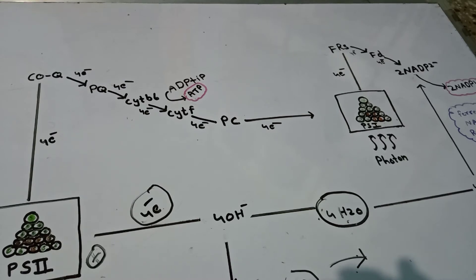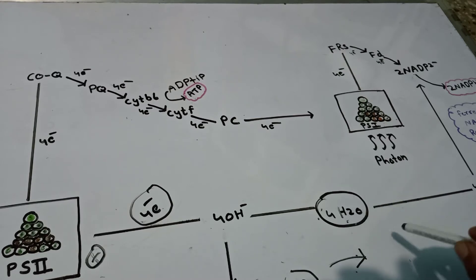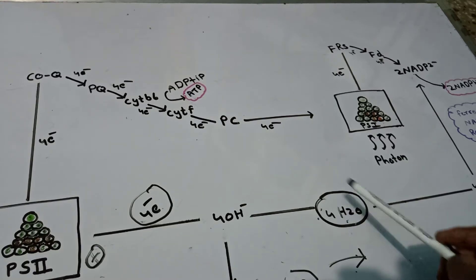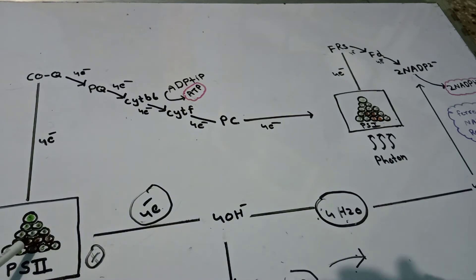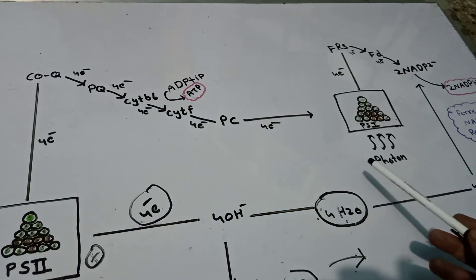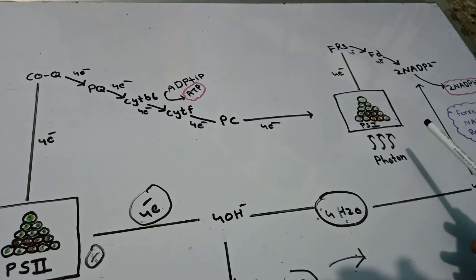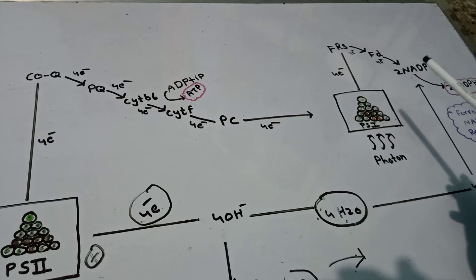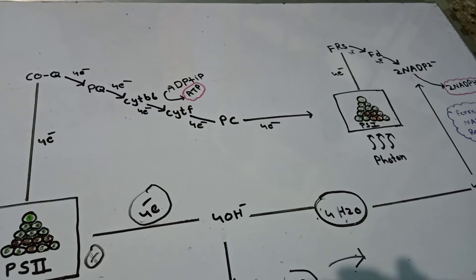Non-cyclic photophosphorylation is basically a transfer of electrons. It is a transfer of electrons from the water molecule to Photosystem 2, and from Photosystem 2, with the help of different electron carriers, it is transferred to Photosystem 1. From Photosystem 1, an electron is released and carried to the NADP molecule.